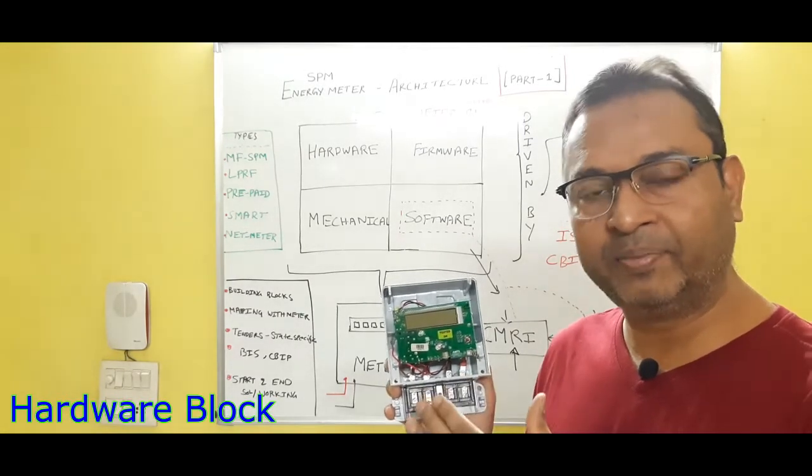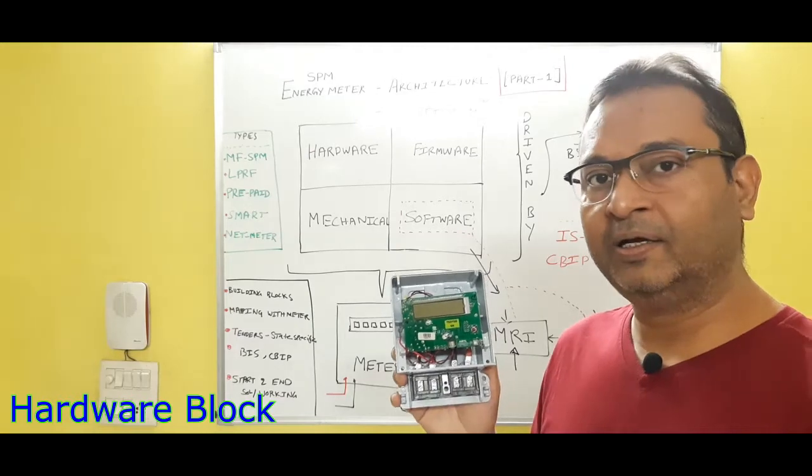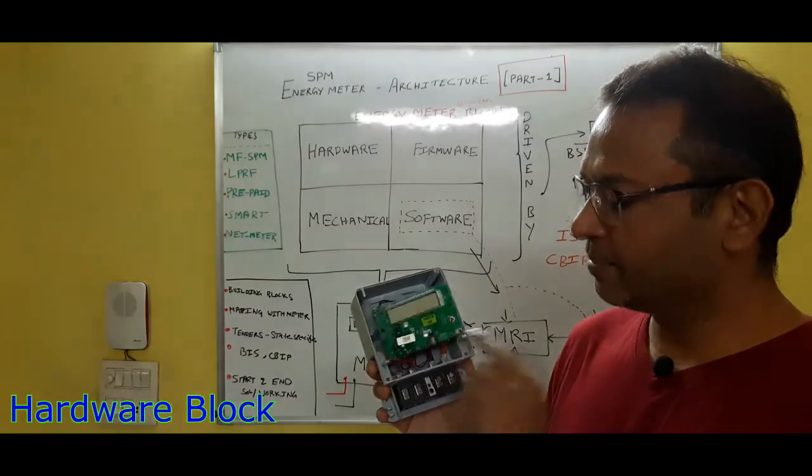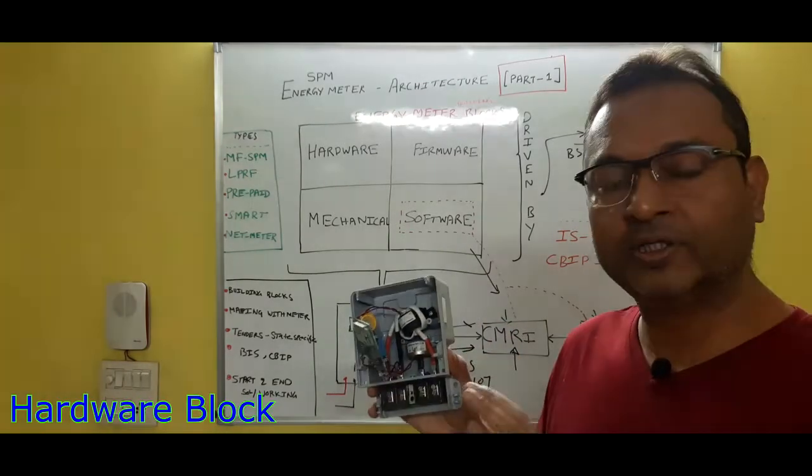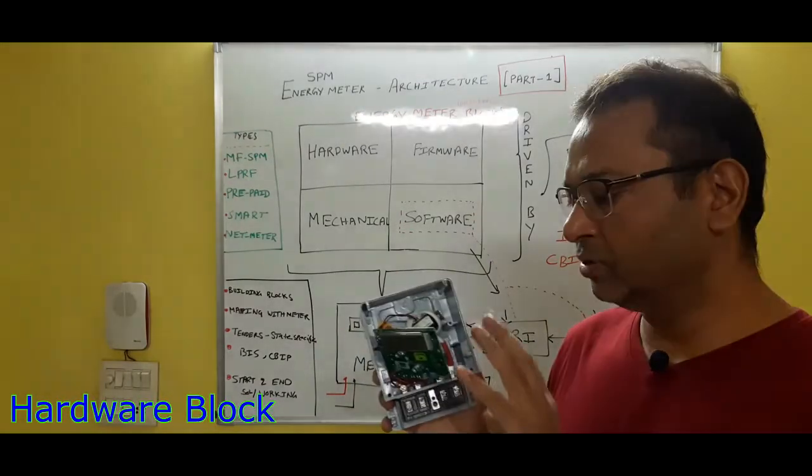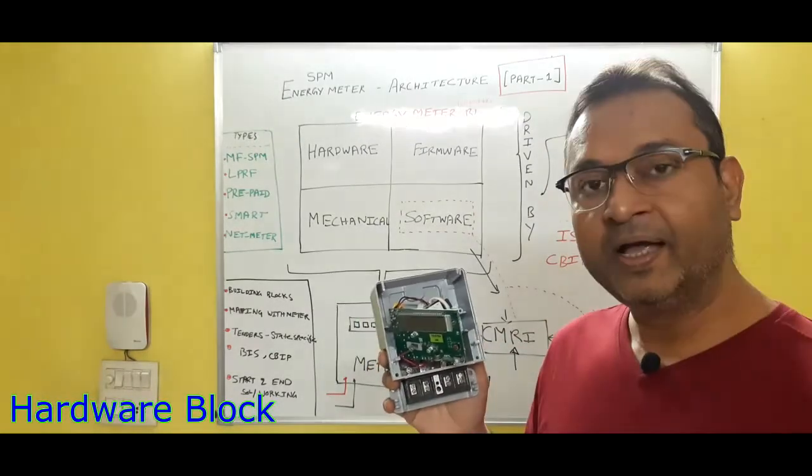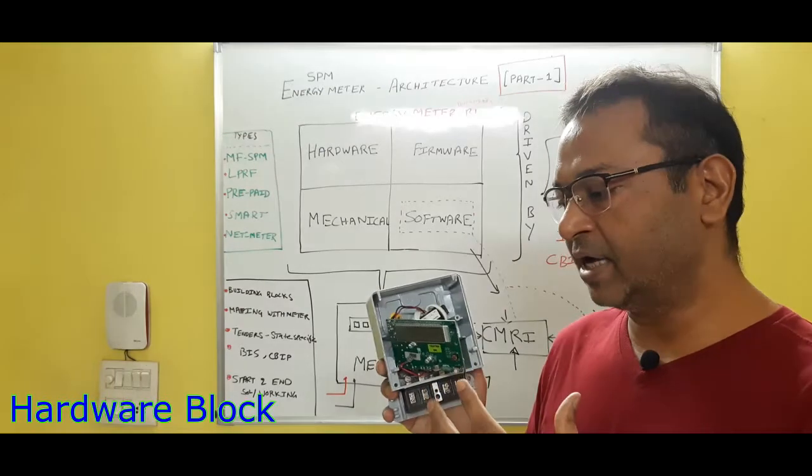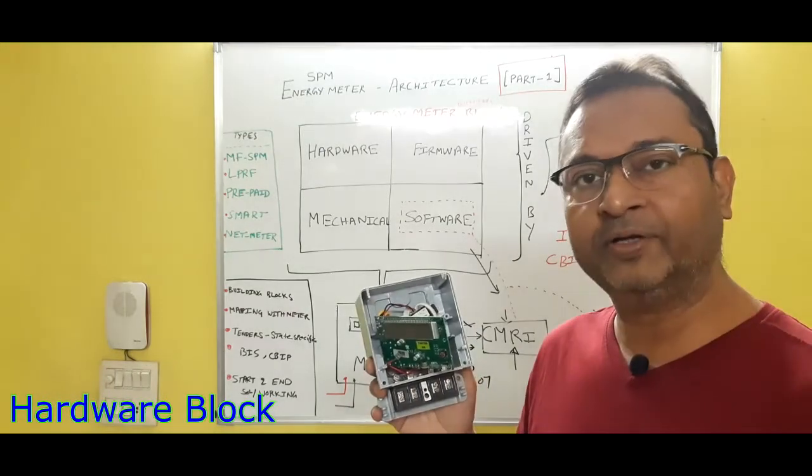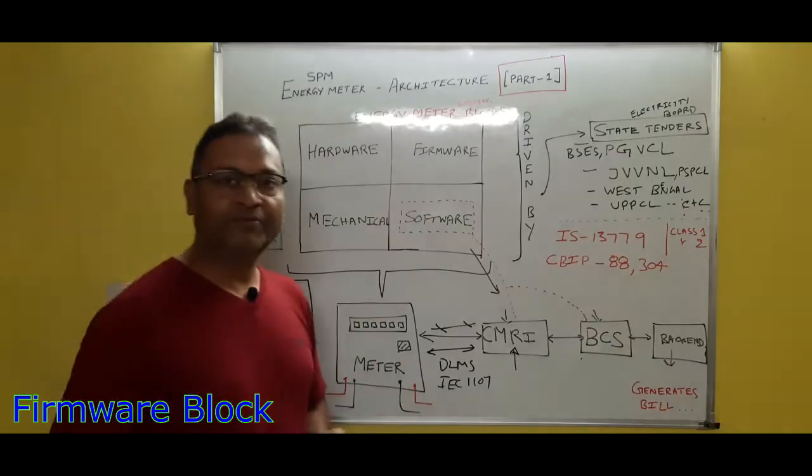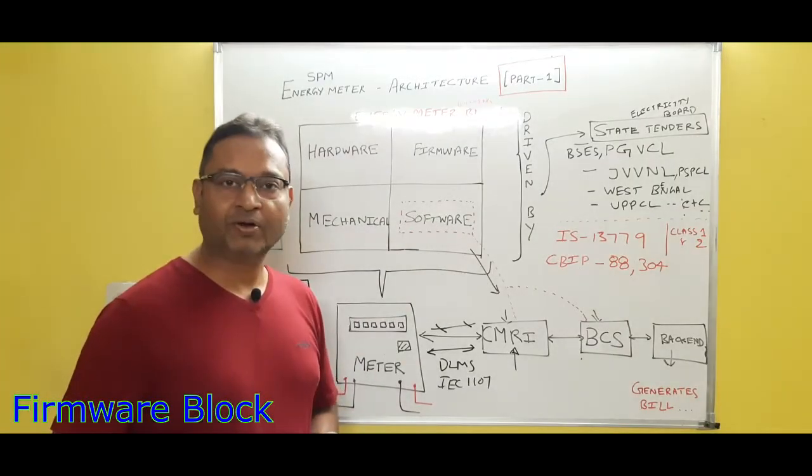And in the third block, the other peripheral components come in picture. For example, your LCD part, your optical or the IR LEDs, and some switches are there. And apart from that, of course, your some microcontrollers and memory chips are there. So these are the major components which come under the hardware, and all these components are selected very carefully according to your tender specifications or the IS specification.